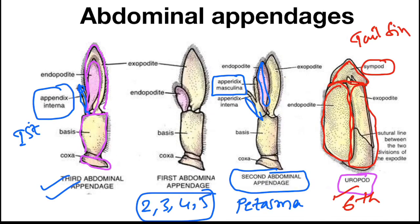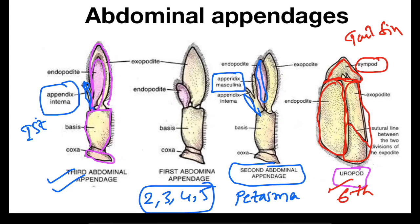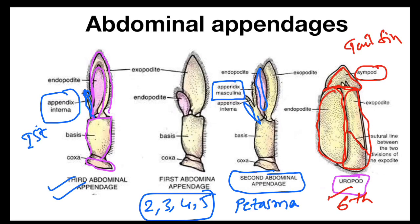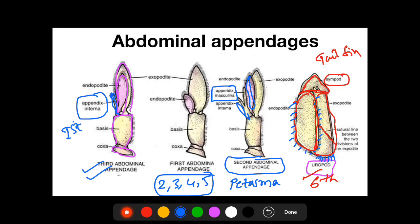The exopodite is bigger than the endopodite. The exopodite is divided by a suture or a line, but the endopodite is not divided by any suture or line. The borders of the exopodite and endopodite are fringed with setae. These setae are present on both the outer and inner margins of the endopodite, but the outer margin of the exopodite does not have setae. The inner margin of the exopodite, however, also has setae.